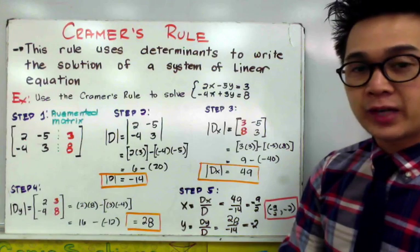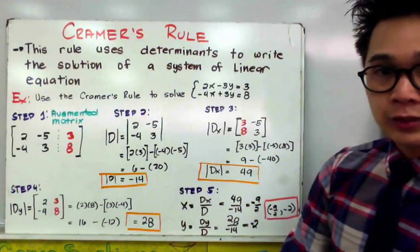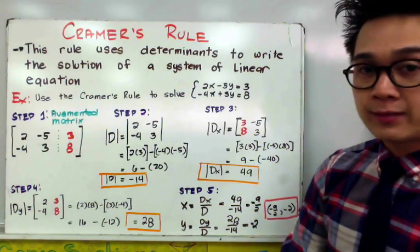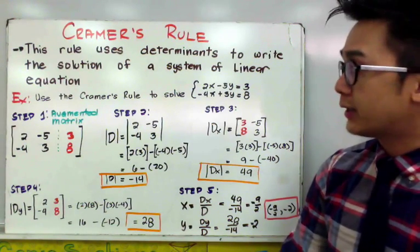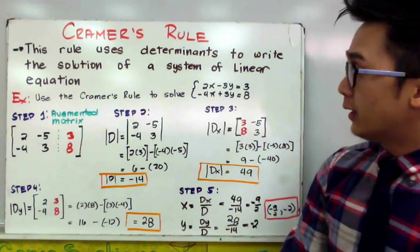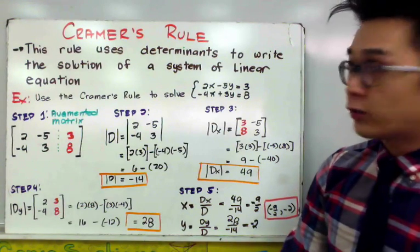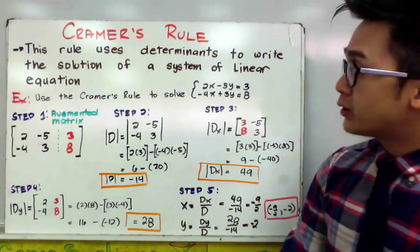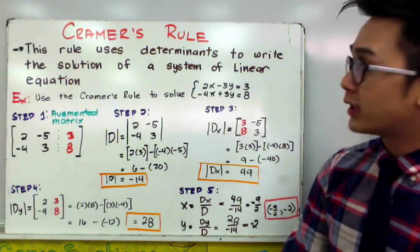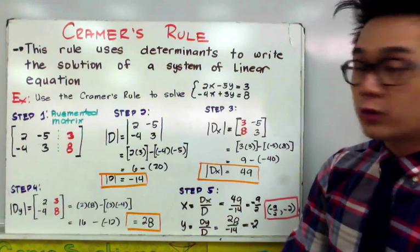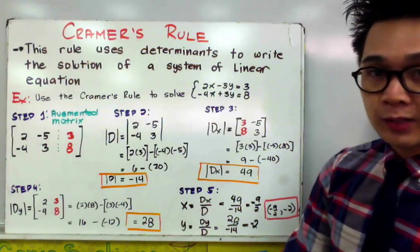One of the many applications of matrices in linear algebra is finding the solution of a linear system. For today, we're going to use a different method to find the value of x, y, or x, y, z in a given linear system using Cramer's Rule. This rule uses determinants to write the solution of a system of linear equations. You need to know how to find the determinant of a 2x2 matrix and a 3x3 matrix to understand the algorithm we're going to use.